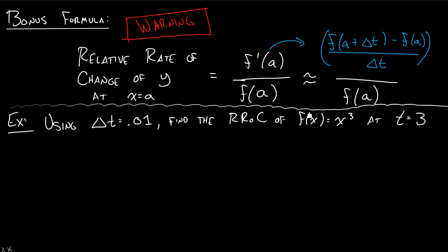Let's do an actual problem. We want to find the relative rate of change of x³ at t equals 3. Let's write down our formula: f'(3) divided by f(3). It tells us to use this approximation, so we're going to say this is approximately equal to... we'll just follow our formula up here. So f(3 + Δt) which is 0.01...